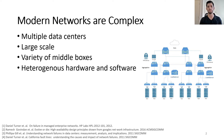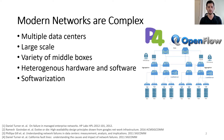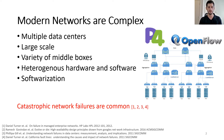Modern networks are complex. They consist of hundreds to thousands of nodes that span multiple data centers. They include a variety of middle boxes such as firewalls and load balancers, and they include heterogeneous hardware and software. Recently, there has been an increased trend toward network softwareization with technologies such as OpenFlow and P4 switches. And with all of this complexity, there have been numerous studies that show that catastrophic network failures are common nowadays.